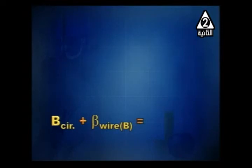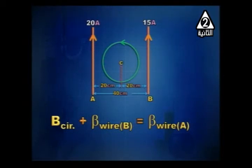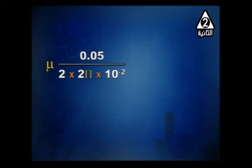Since the two wires carry current in the same direction, their fields between them are in opposite directions. The field of wire B and the field of the circular coil have the same direction; these two together are cancelled out by the field of wire A. So: B_circular + B_wire_B = B_wire_A.